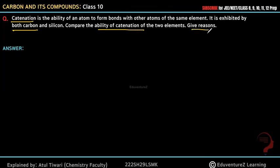Now what is it? It is said that catenation is the property of which carbon is supposed to make a big chain with its own atom. So if you have a long chain with its properties, then it is exhibited by both carbon and silicon.